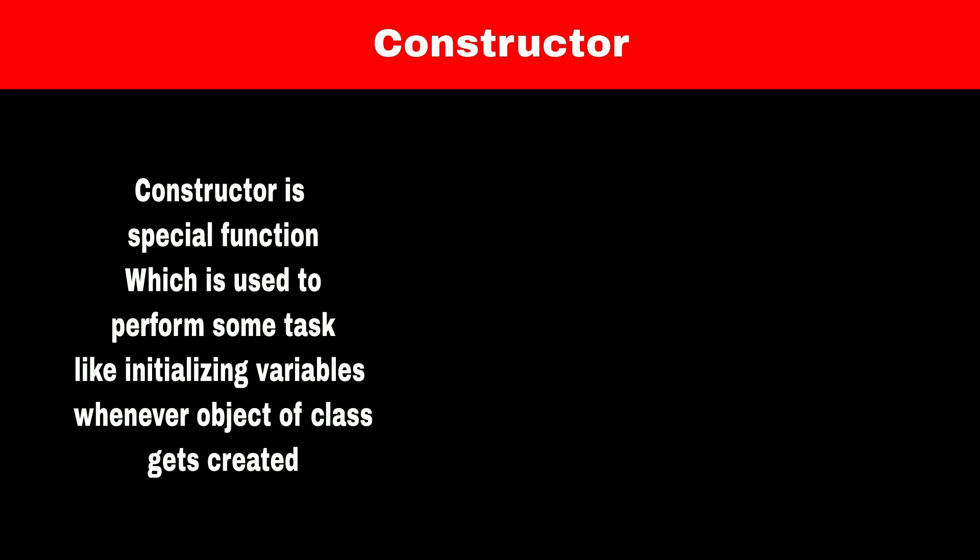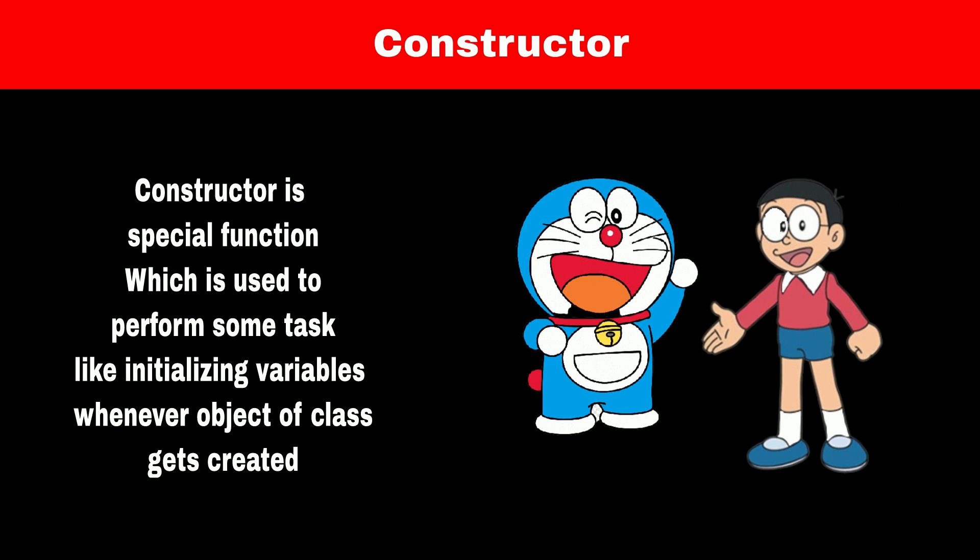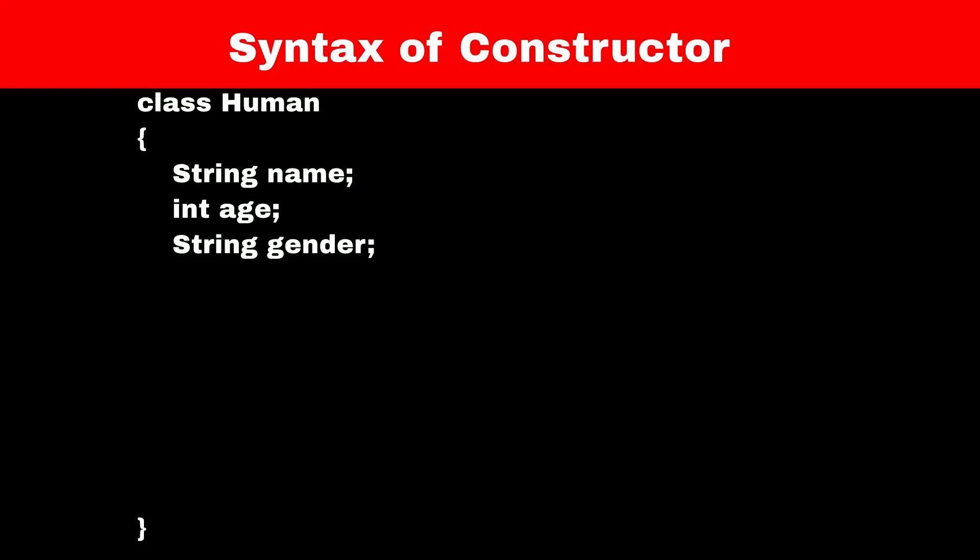So constructor is like the robot that Nobita created, which will automatically perform activities like assigning values to variables whenever an object of a class gets created. Now let's create a class human which has 3 variables: name, age, and gender. Constructor is a special type of function that doesn't have a return type and whose name is the same as the class name.